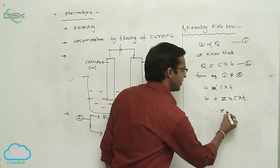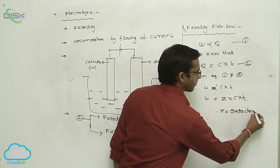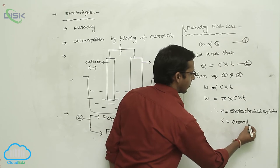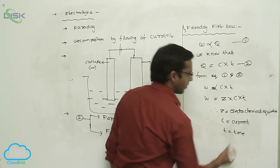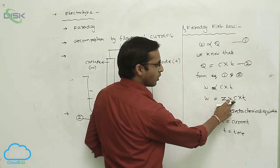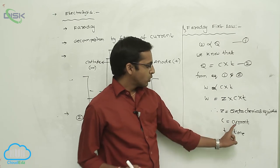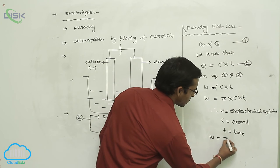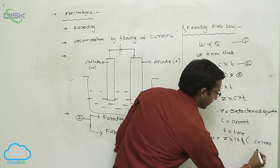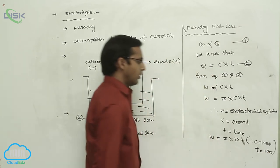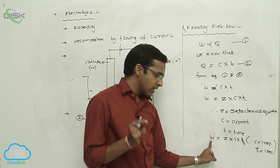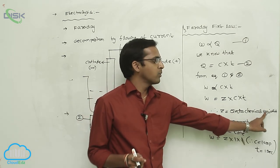Here Z is called electrochemical equivalent, C means current, and T means time. What is electrochemical equivalent? If C equals 1 ampere and T equals 1 second, then W equals Z into 1 into 1, so W equals Z. Whenever the applied current is 1 ampere through 1 second, the weight of chemical substance equals Z. Therefore, Z is called the electrochemical equivalent.